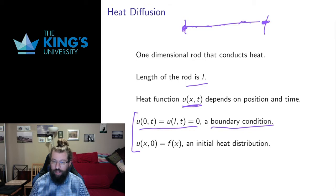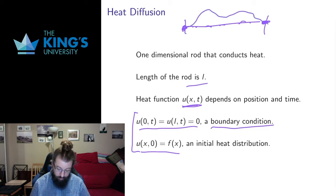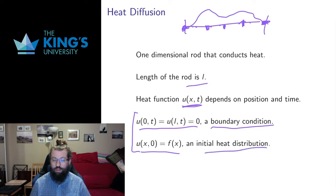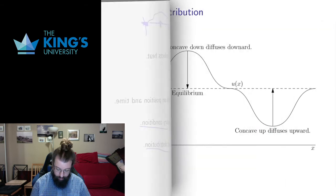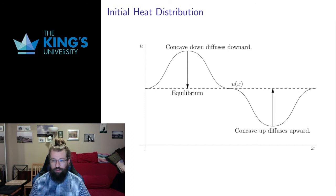That tells me what happens at the edge of the system. I also need to know what happens at the start of the system — some kind of initial heat distribution, a function that tells me it's hotter here at the start, a little cooler here, a little warmer here, and then it goes back to zero. That's an initial heat distribution, and the question is what does that do over time? So let's look at an initial heat distribution in this figure and try to make an argument about what it is trying to do.